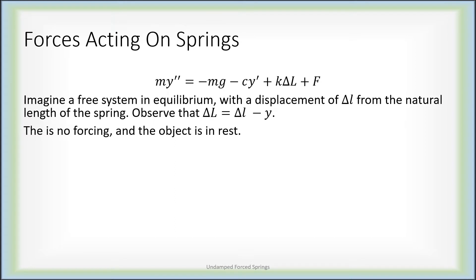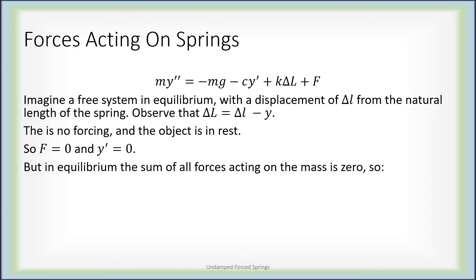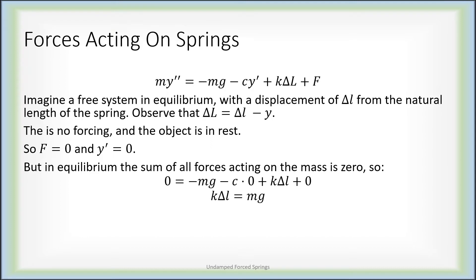In this scenario, there is no forcing function — we have a free system at equilibrium, so the object is at rest. The forcing function is zero and y prime is also zero. But in an equilibrium position, the sum of all forces is zero. So we end up with zero equals negative mg, with a zero damping term, plus k times delta little l, plus no forcing function. We determine that k delta little l must be exactly mg.